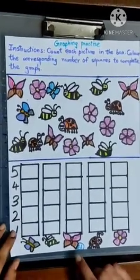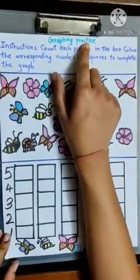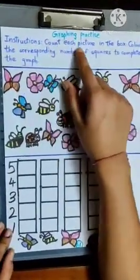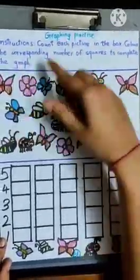Today, we are going to solve page number 61 from Maths workbook. Graphing practice. Instructions: Count each picture in the box. Color the corresponding number of squares to complete the graph.